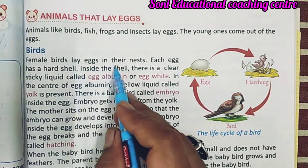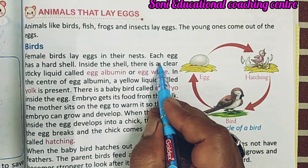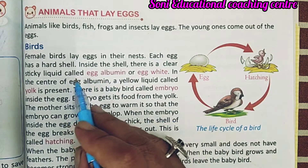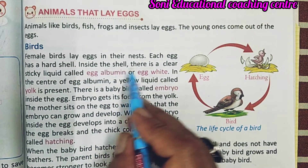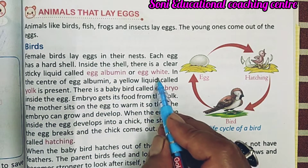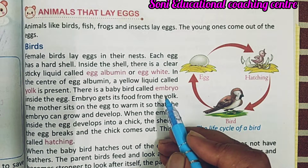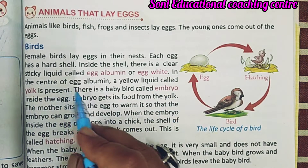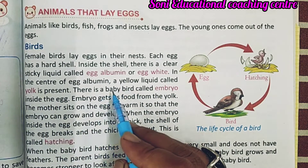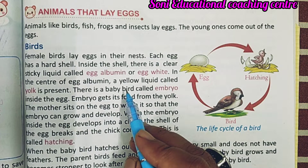Birds: female birds lay eggs in their nest. Each egg has a hard shell. Inside the shell, there is a clear sticky liquid called egg albumin or egg white. In the center of the egg albumin, a yellow liquid called yolk is present — उस अंडे के अंदर एक yellow color का liquid होता है जिसको yolk बोला जाता है।